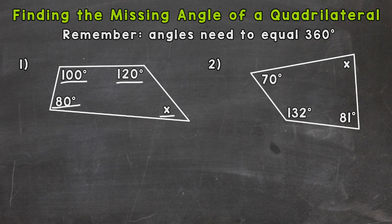So the first thing we do is add up those knowns. So 120 degrees plus 100 plus 80. So if we add those up, we get 300 degrees.